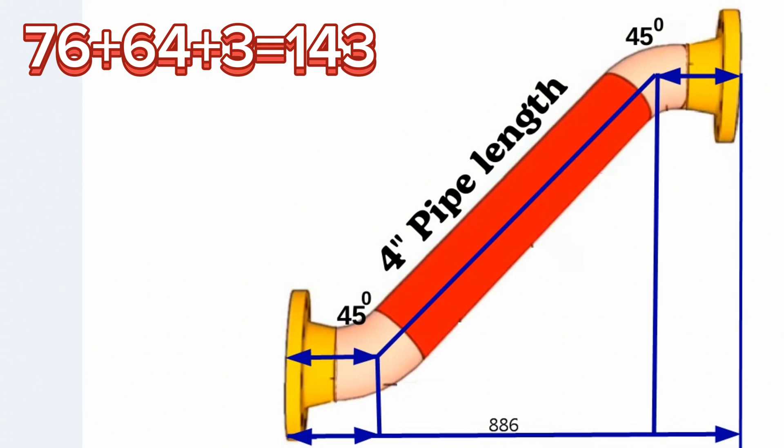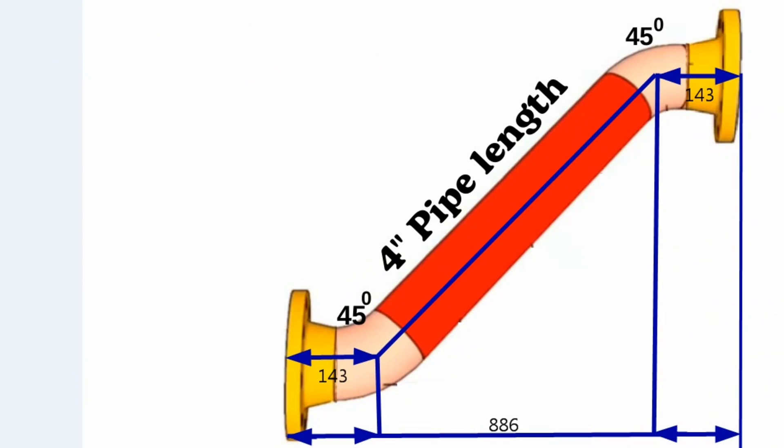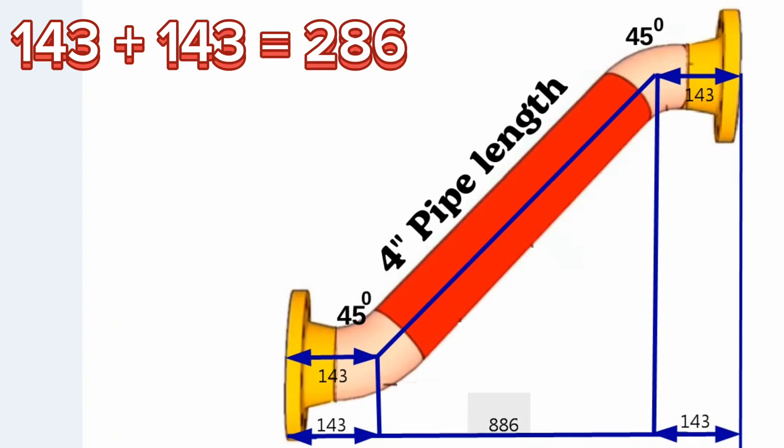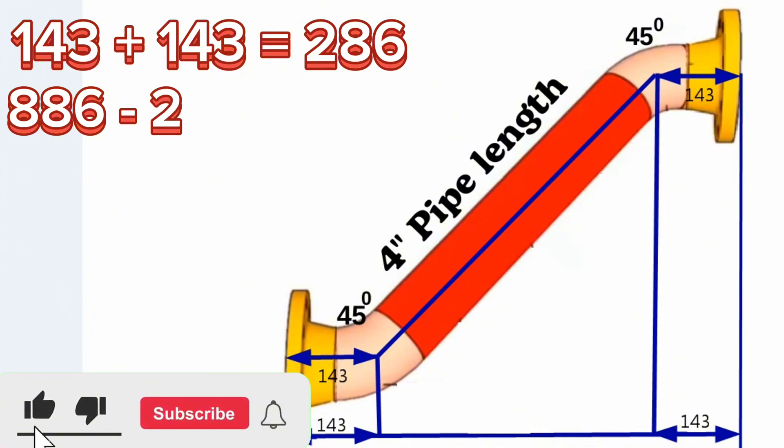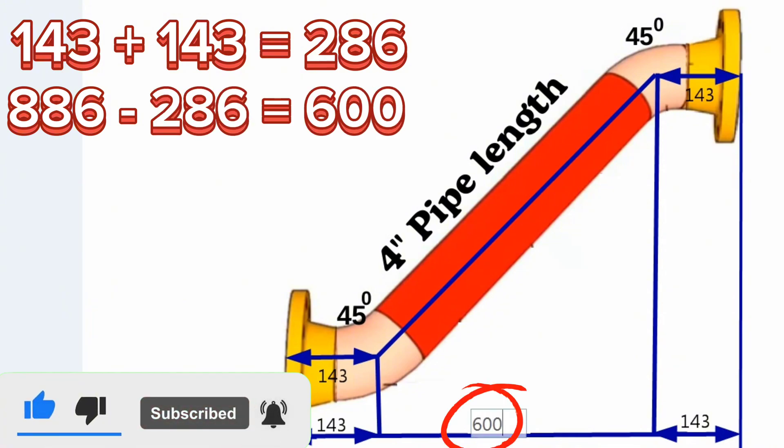The same rule on the other side of the pipe spool will be 143 millimeters. Two pieces of 4-inch weld neck flange and two pieces of 45-degree butt weld elbows and 2 times 3 millimeters gap equals 286 millimeters. Subtract 286 millimeters from the total length of 886 millimeters. The length of this distance is 600 millimeters.